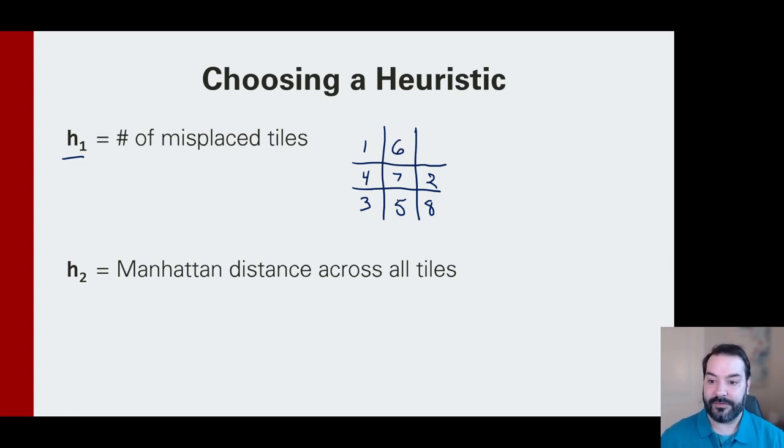If we're looking at it from this first H1 heuristic, we're simply counting the number of tiles in the wrong place. So 1, 2, this should be a 2, this should be 3. I think all of them are in the wrong places. That one doesn't count. So we would get an H1 equaling 8.